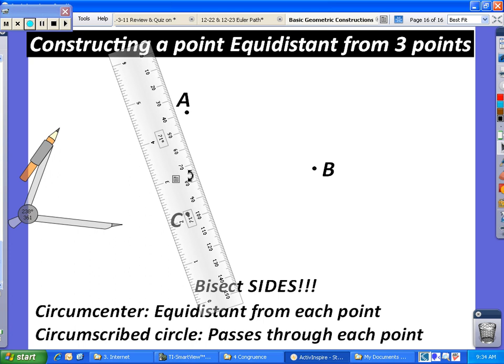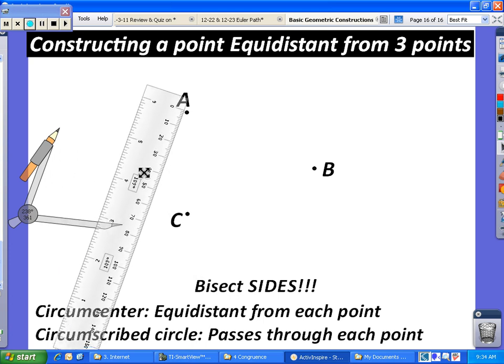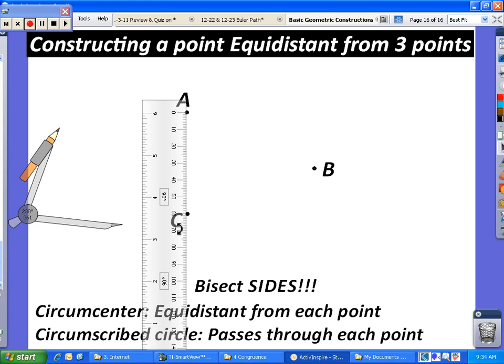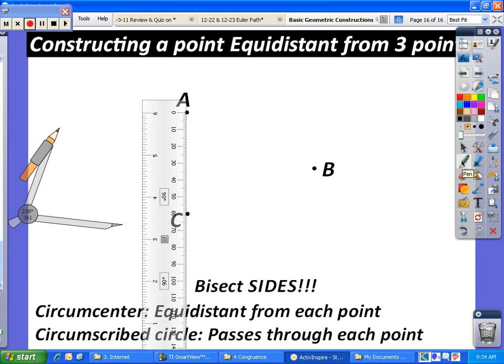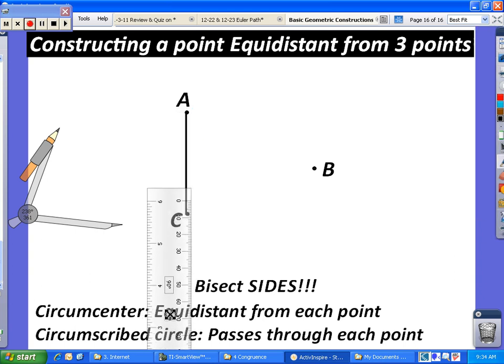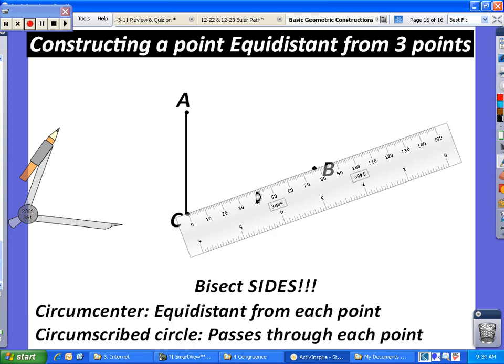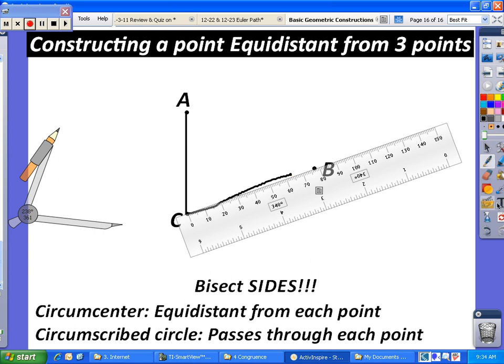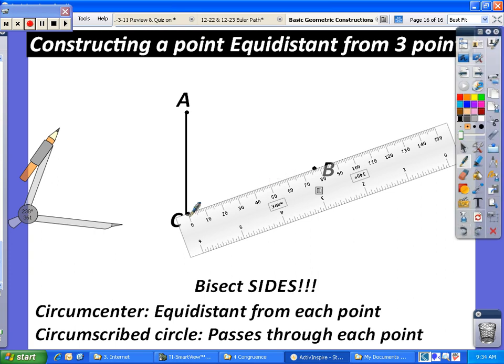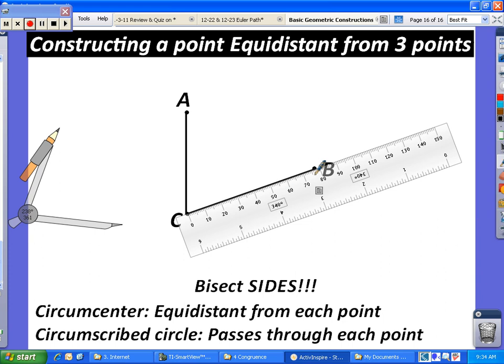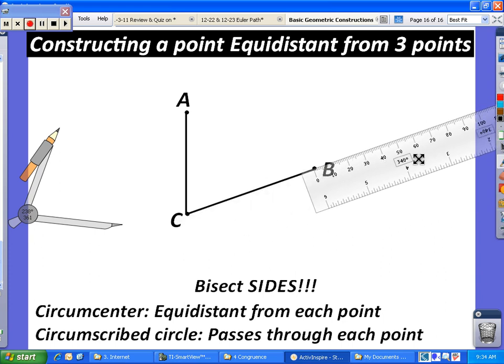So let's go ahead and using our ruler, let's go ahead and draw this triangle, the sides of this triangle. So I'm going to connect A, C. And I'm going to connect B, C. Let me try that again. And now I'm going to finally connect A, B.